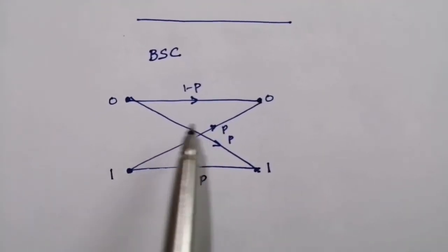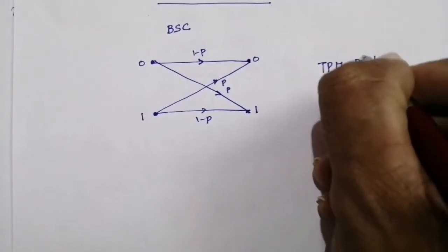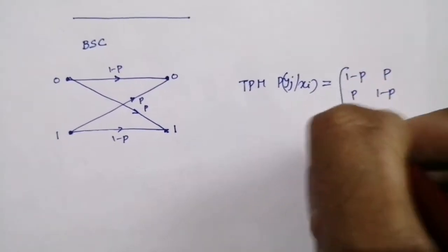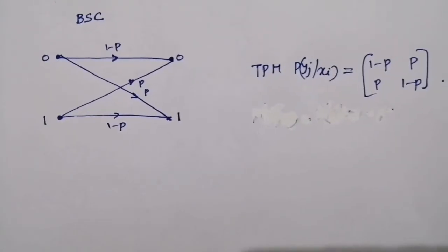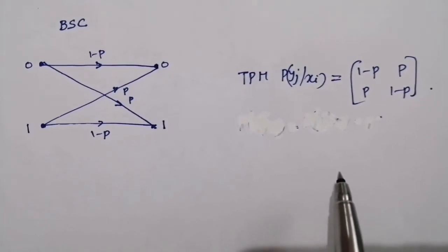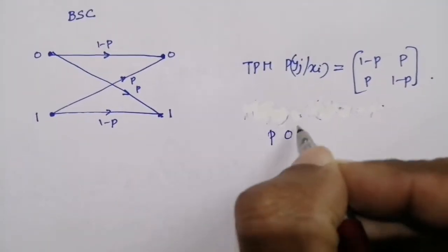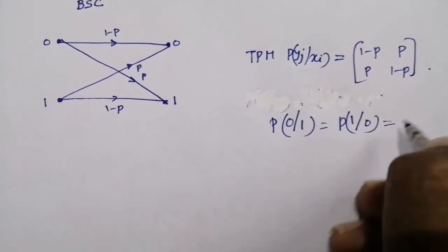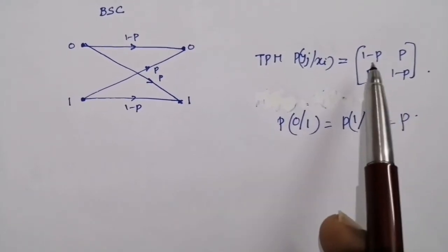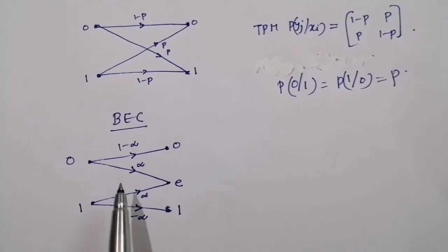The channel diagram for a binary symmetric channel and the transition probability matrix (TPM), p(yj|xi), can be written as: [(1-p, p), (p, 1-p)]. For a symmetric channel, the probability of receiving a 1 after transmitting 0 is the same as the probability of receiving a 0 after transmitting a 1. That is, the probability of error is independent of the transmitted symbol: p(0|1) = p(1|0) = p. The elements of each row are a permuted combination: (1-p, p) and (p, 1-p).